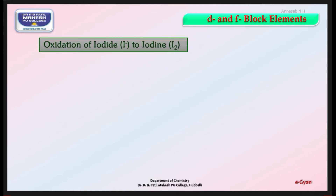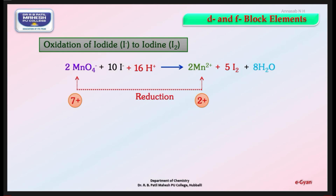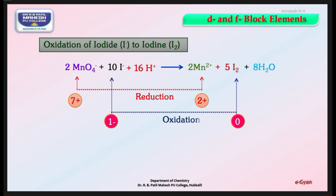Oxidation of iodide (I⁻) to iodine (I2): The final balanced equation is: 2MnO4⁻ + 10I⁻ + 16H⁺ → 2Mn²⁺ + 5I2 + 8H2O. The change in oxidation number of Mn from +7 to +2 is reduction, and the change in oxidation number of iodine from −1 to 0 is oxidation.